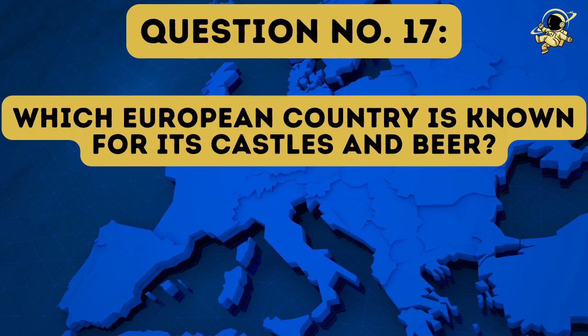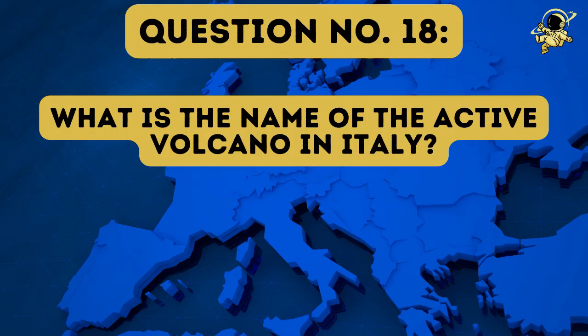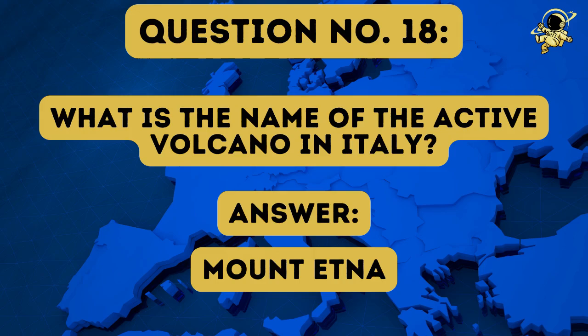Which European country is known for its castles and beer? And the answer to question number seventeen is the Czech Republic. Although, if anybody said Germany again, I guess you have to give them that point as well. And then we come to question number eighteen: What is the name of the active volcano in Italy? And the answer to question number eighteen is Mount Etna.